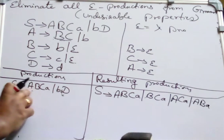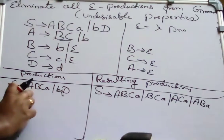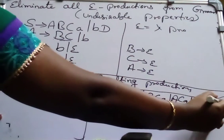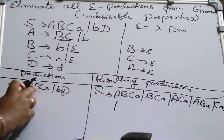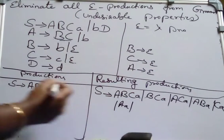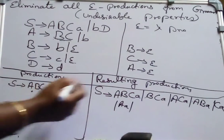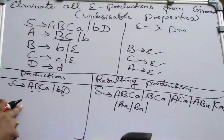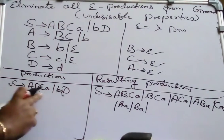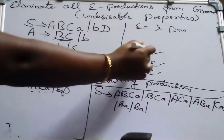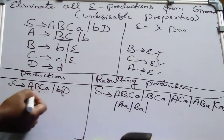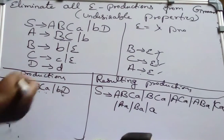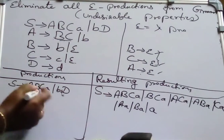Now substitute epsilon for two variables at a time. If I substitute epsilon for A and B, I will get C, A. If I substitute epsilon for B and C, I will get A, A. If I substitute epsilon for A and C, I will get B, A. Since we want to remove all epsilon productions, we should list out all possible productions. The other possibility is to substitute epsilon for all three: A, B, C. Since B, C derive epsilon and A also derives epsilon, if I substitute epsilon for all three variables, I will get just A.